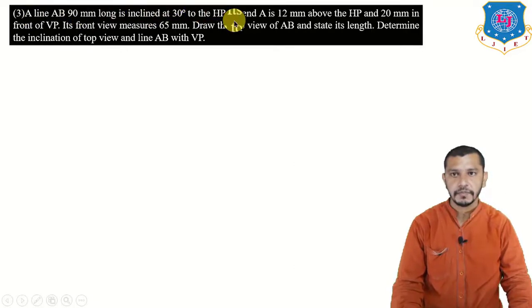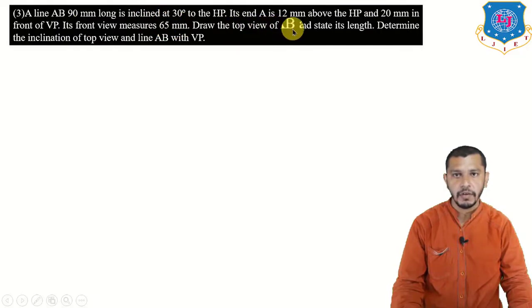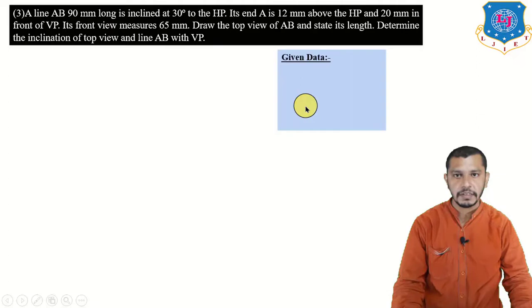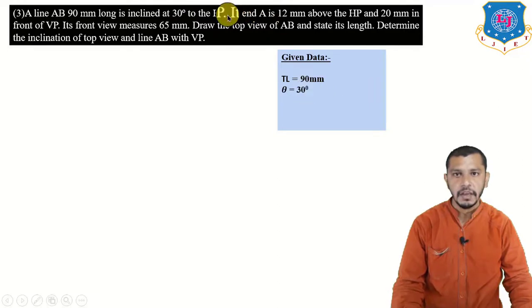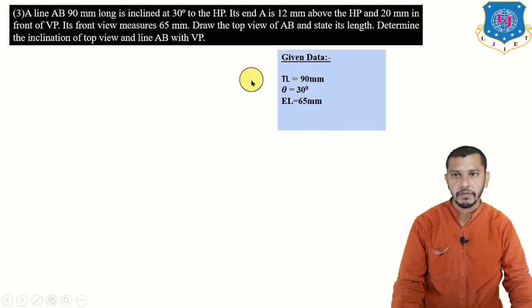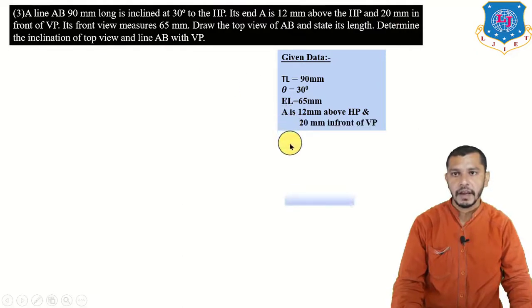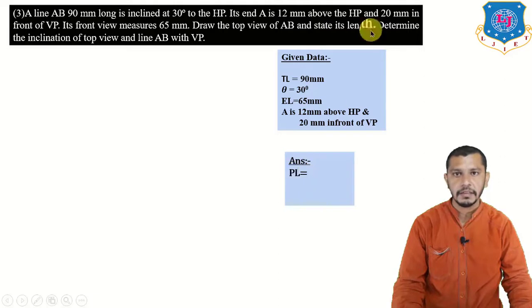Next example: a line AB 90 mm long is inclined at 30 degrees to HP. Its end A is 12 mm above HP and 20 mm in front of VP. Its front view measures 65 mm. Draw the top view of AB and state its length. Determine the inclination of the top view and the line AB with the vertical plane. Given: true length is 90 mm, theta is 30 degrees, A is 12 mm above HP, 20 mm in front of VP, elevation length is 65 mm. Find plan length, beta, and phi.